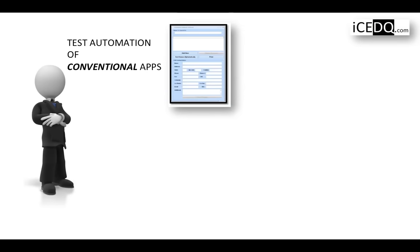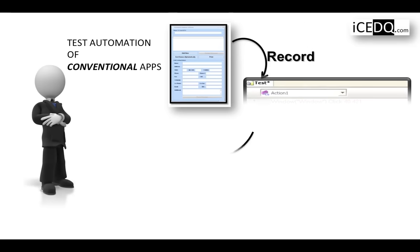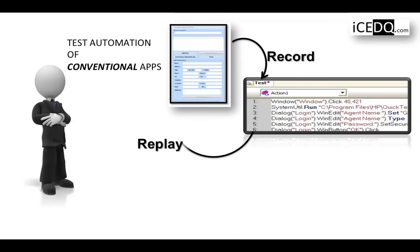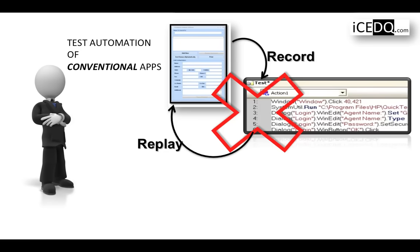Applications have screens where users perform actions or data entry. Conventional test automation tools record on-screen actions and replay them during testing. Unfortunately, this is useless in ETL or data testing, as there are no screens, and the general tools for quality assurance are not good enough. Data-centric projects are fundamentally different, and these conventional tools totally lack a rules engine for test automation of data.